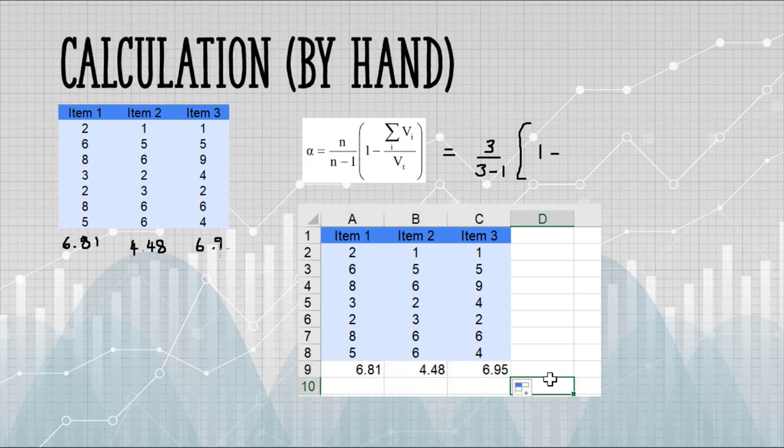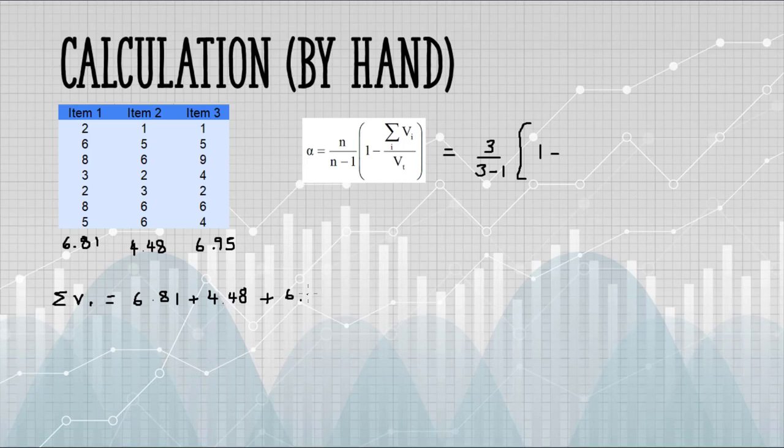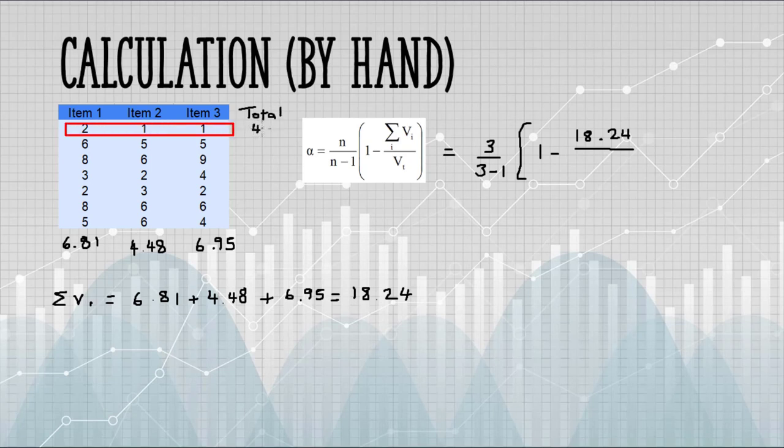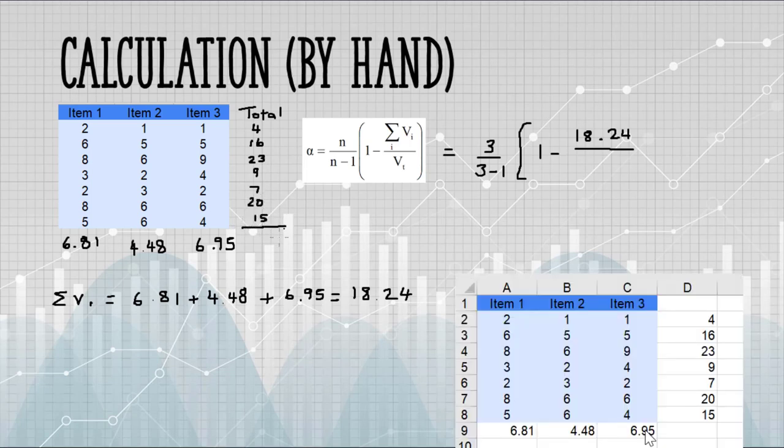So now I know all of my variances. I just need to add those up. I get 18.24. And that's my numerator. The denominator here is the variance of the total. So I'm going to add another column to my data and total my items up. So that first row, 2 plus 1 plus 1 is 4. The next row is 16. And I'm just going to work my way down the rows, adding everything up.